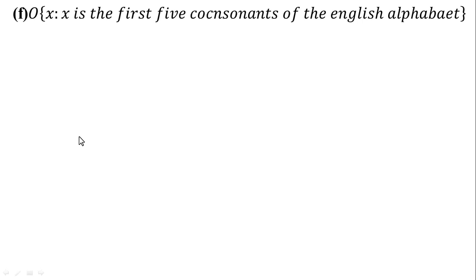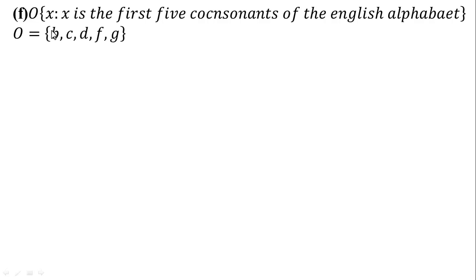In part F, O = {x : x is the first 5 consonants of the English alphabet}. We write the first 5 consonant English alphabet letters. O = {B, C, D, F, G}.